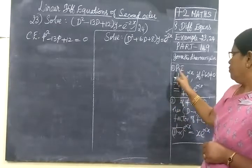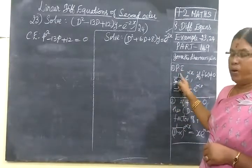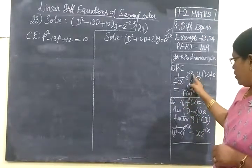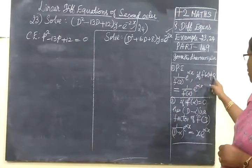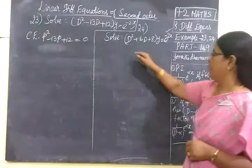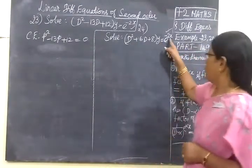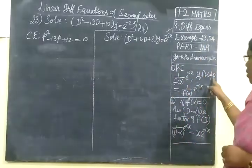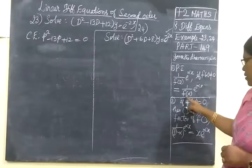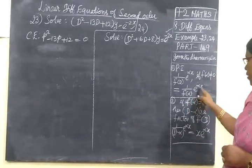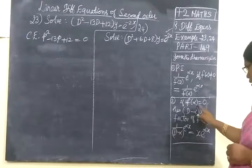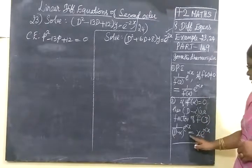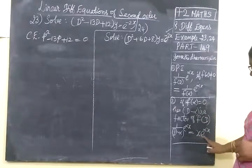Here case 1 and case 2. For the particular integral, we write it in the form 1 by f of d, e power alpha x. If f of alpha is not equal to 0, you substitute alpha value — here minus 2 — for d. If it is not equal to 0, the answer is 1 by f of alpha, e power alpha x. If it is equal to 0, that means d minus alpha is a factor, and the particular integral is x e power alpha x.